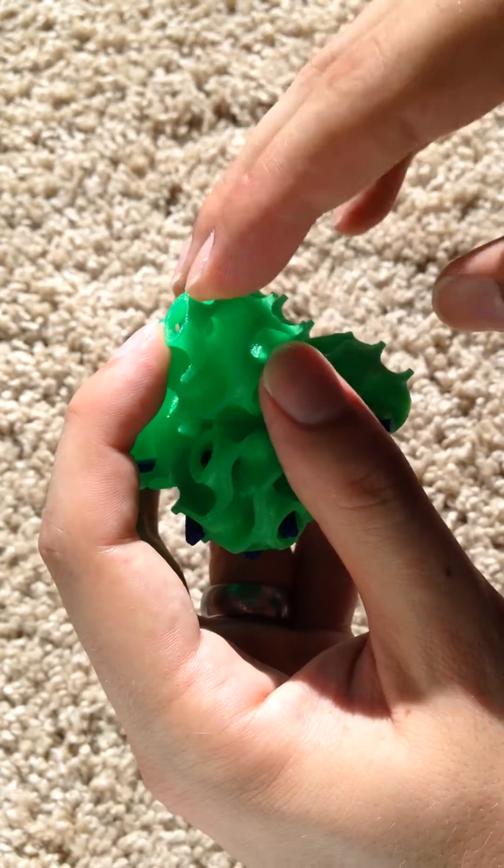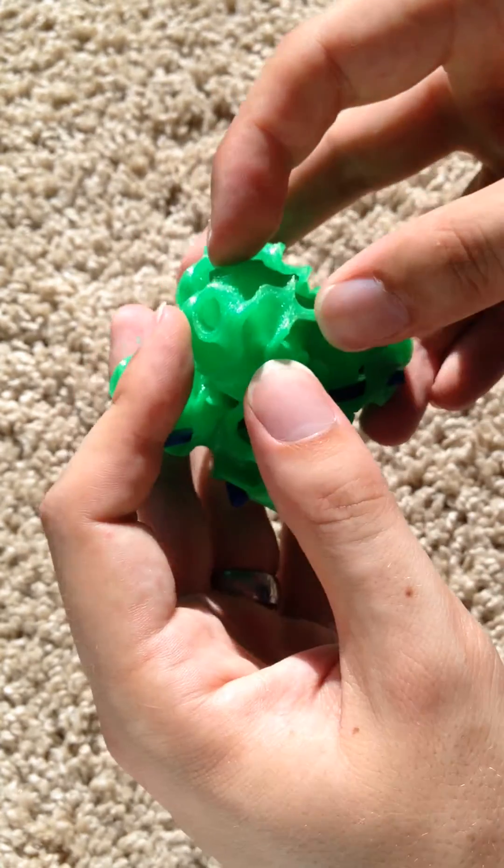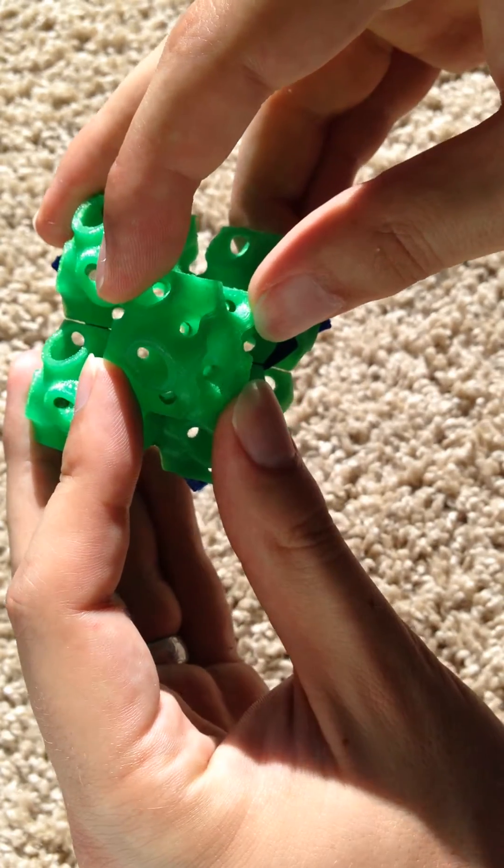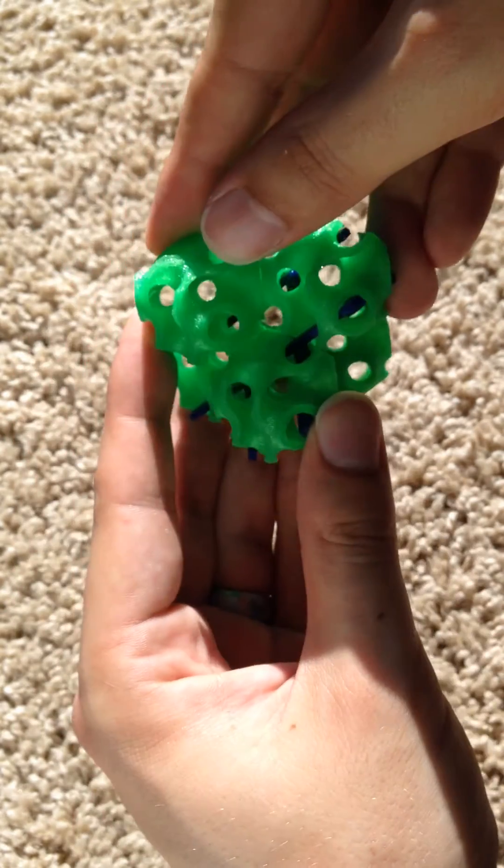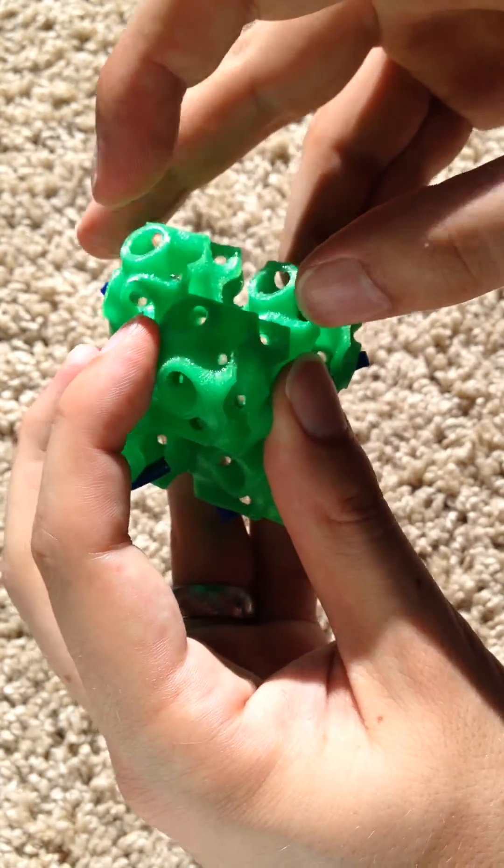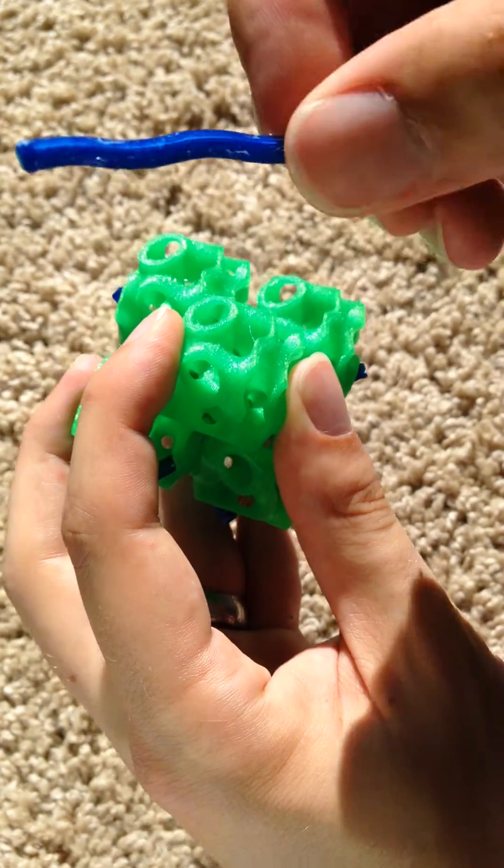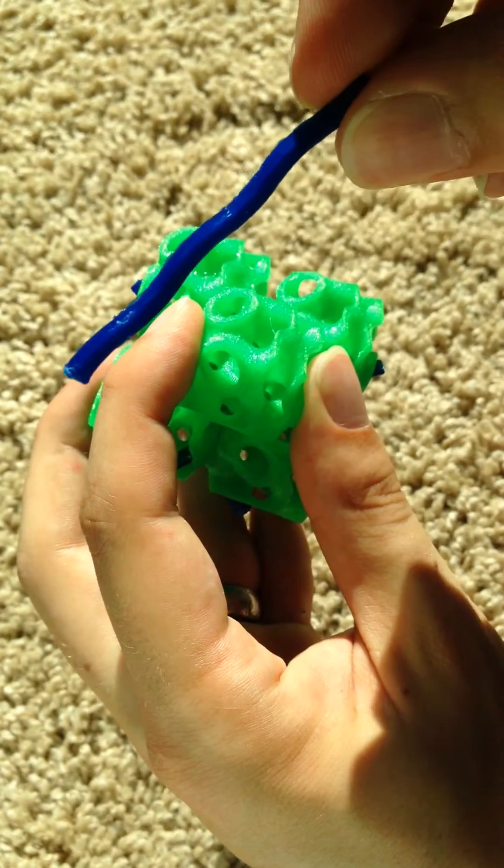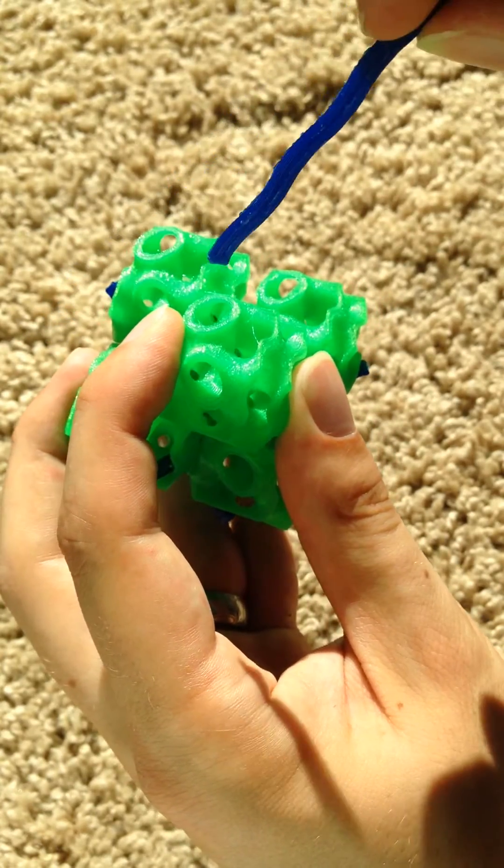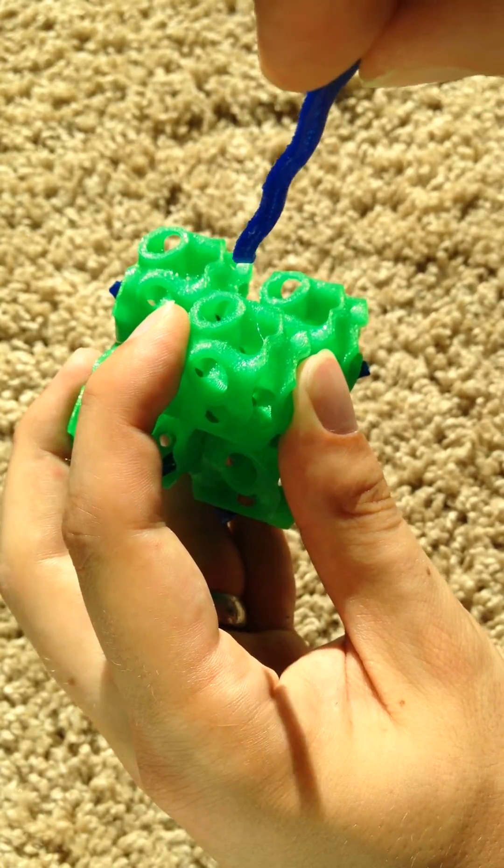And what's really interesting about gyroids is that they have these strange networks of holes through them in all kinds of different directions. And we can make use of those. So in this case, what I've designed are these little connectors, which are basically just little wiggly rods. And what's interesting about these holes is these holes are actually helical in nature.